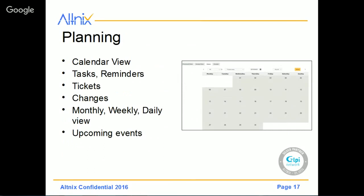We also have a planning view. This is where you can look at the different types of activities coming up — whether it is a task, a reminder, a ticket that needs resolution, or changes that need approval or execution. A planning screen can be looked at monthly, weekly, or on a daily basis. It gives you a quick snapshot of different events that are upcoming during a particular timeframe, and it's a nice way to keep track of all the activities happening in your department.